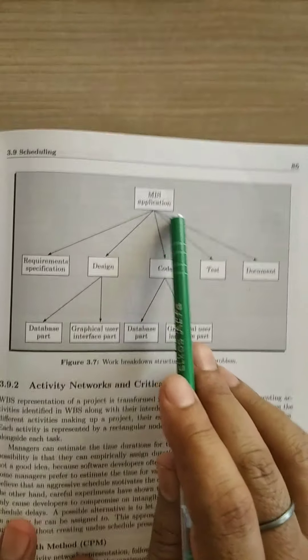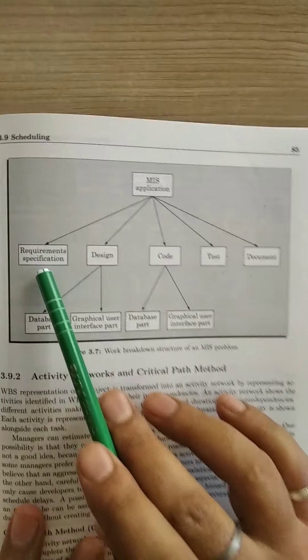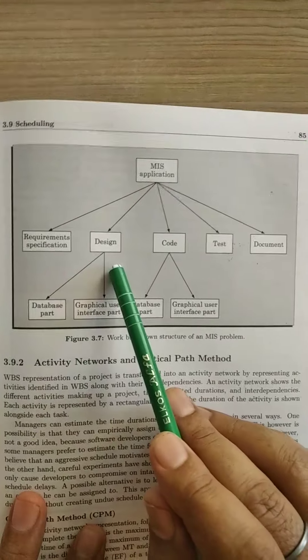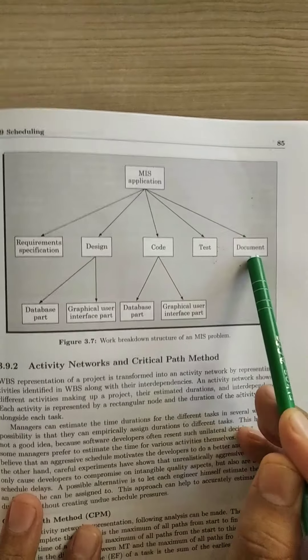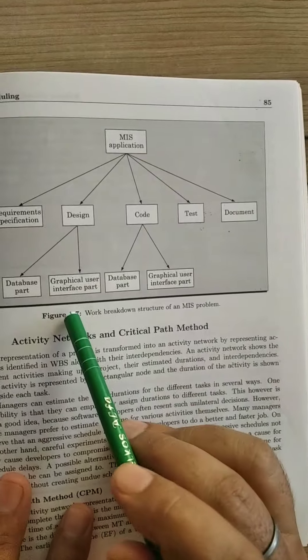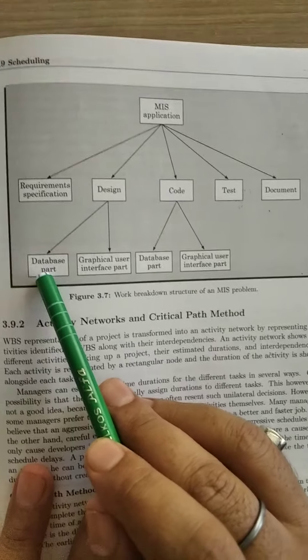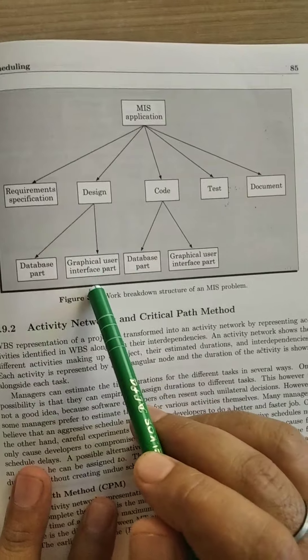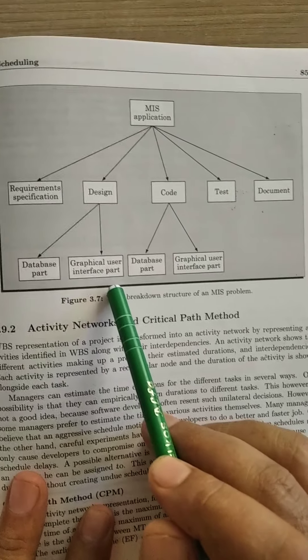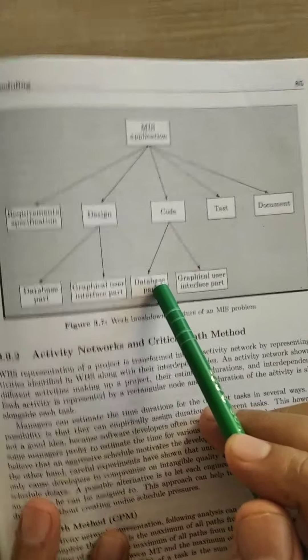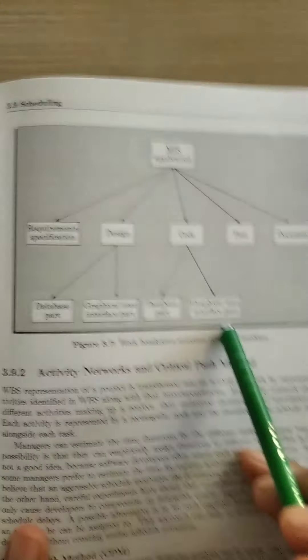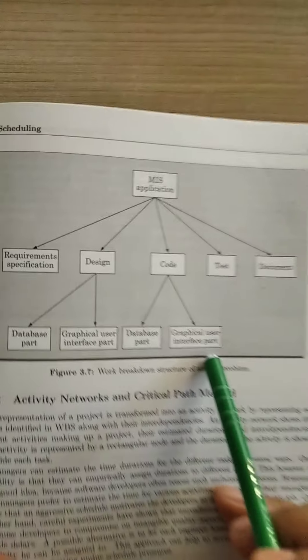Here, for an example, we can take an MIS application which to be developed comprises following activities: requirement specification, design, code, test, documentation, followed by further activities. For example, in design there are two types: database part and graphical interface part. In coding, there is database part coding and user interactive page form graphical user interface coding.